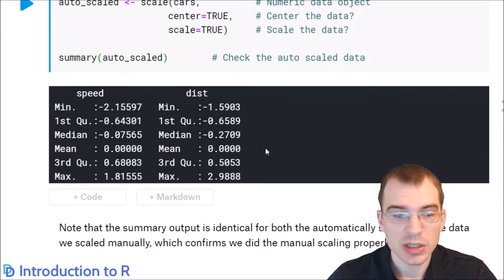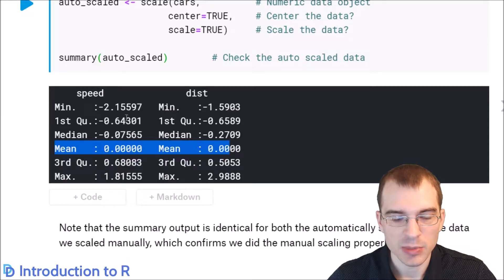As you can see speed and distance now both have a mean of zero. The spreads aren't exactly the same but they're pretty similar. They're within the range of say two to three.